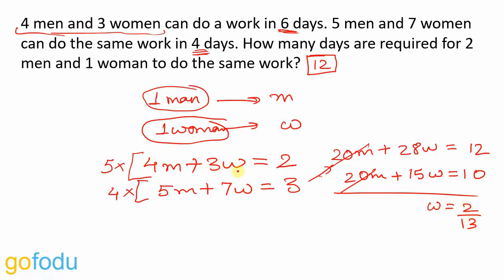Put this value back in any one of these equations. 4M plus 6 upon 13 is equal to 2, so M will come out to be 2 minus 6 upon 13, that is 20 upon 13 upon 4, will give me 5 by 13 as the value of M.